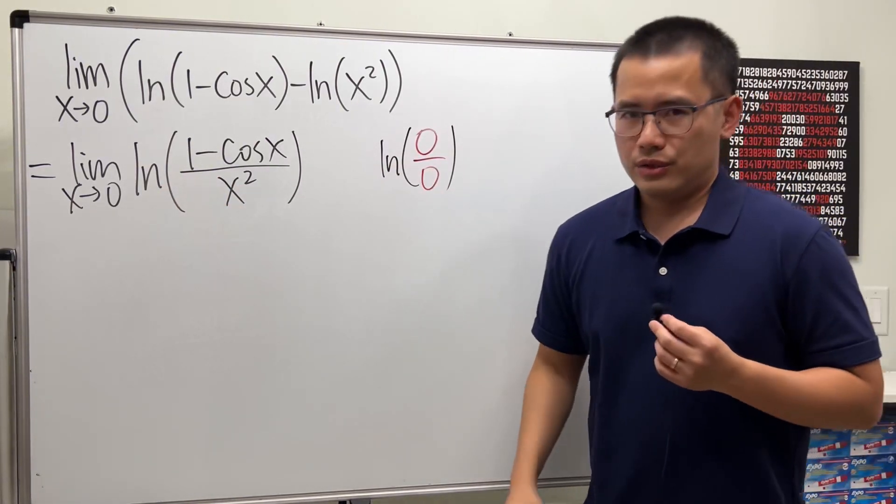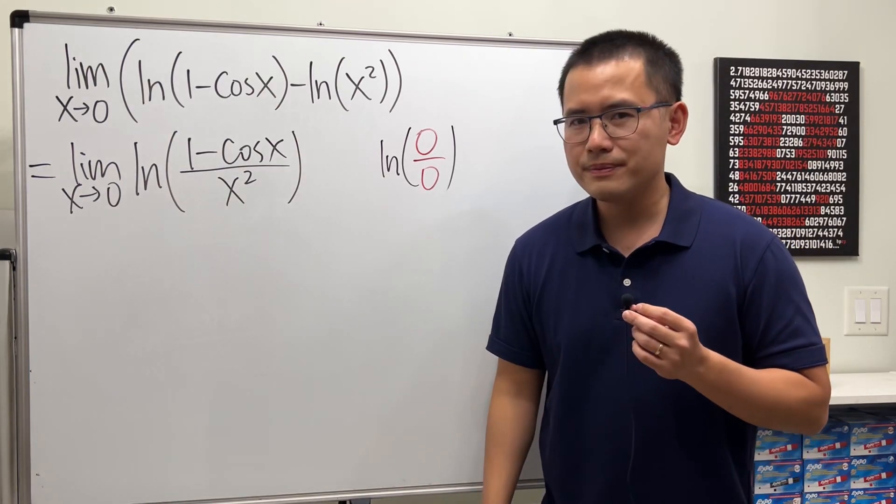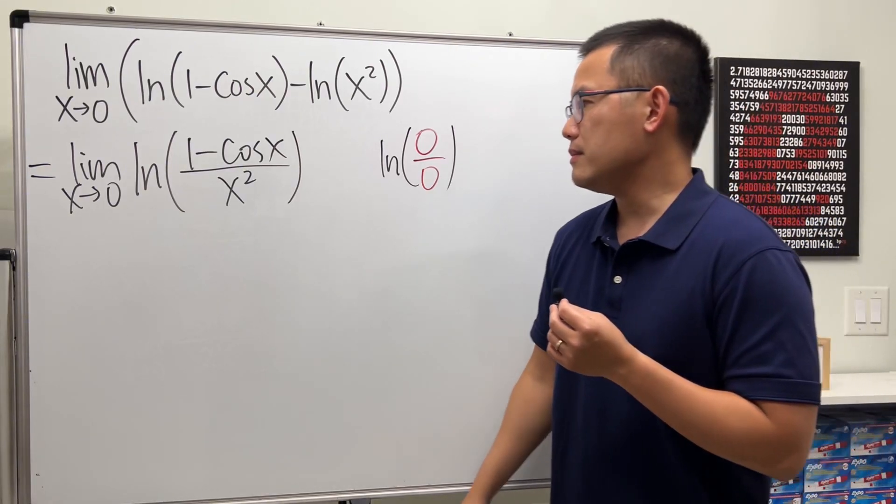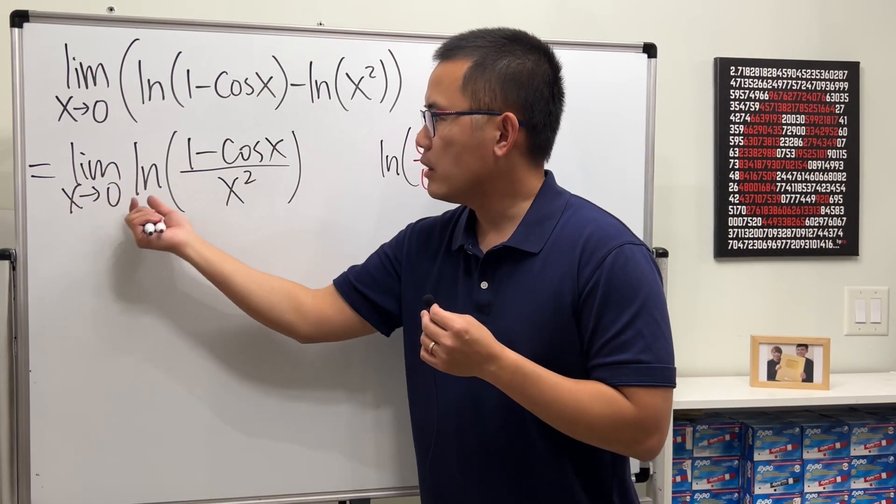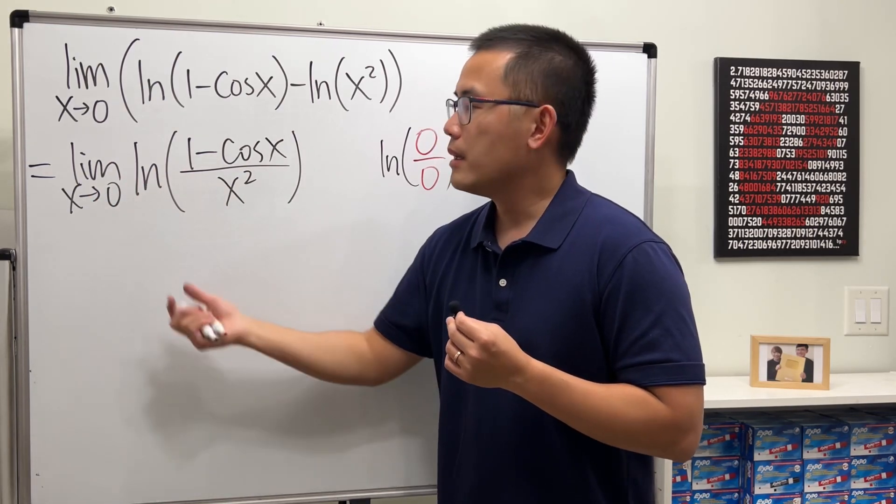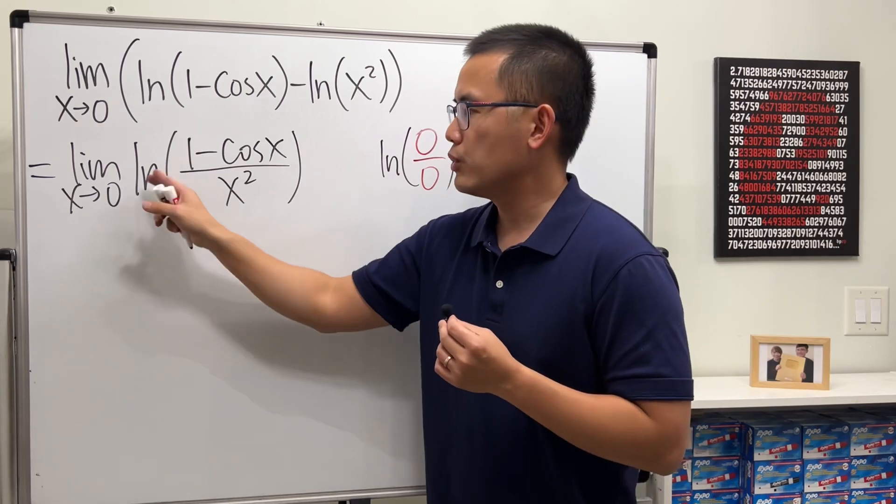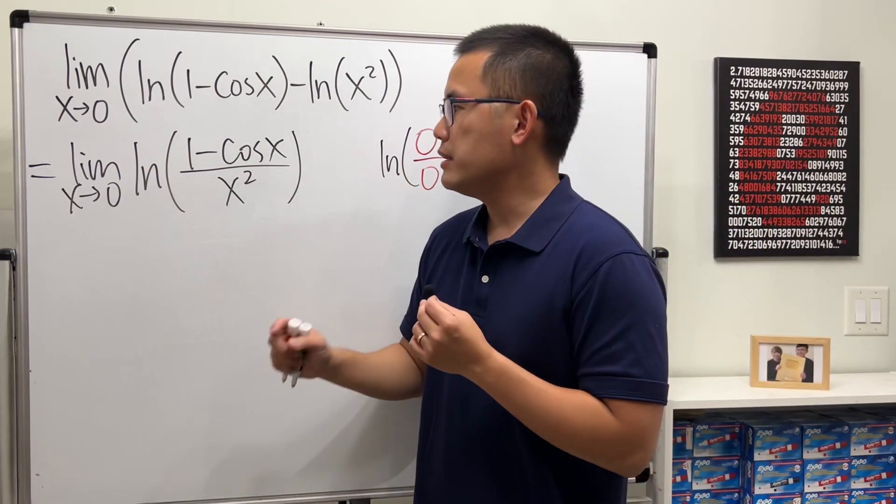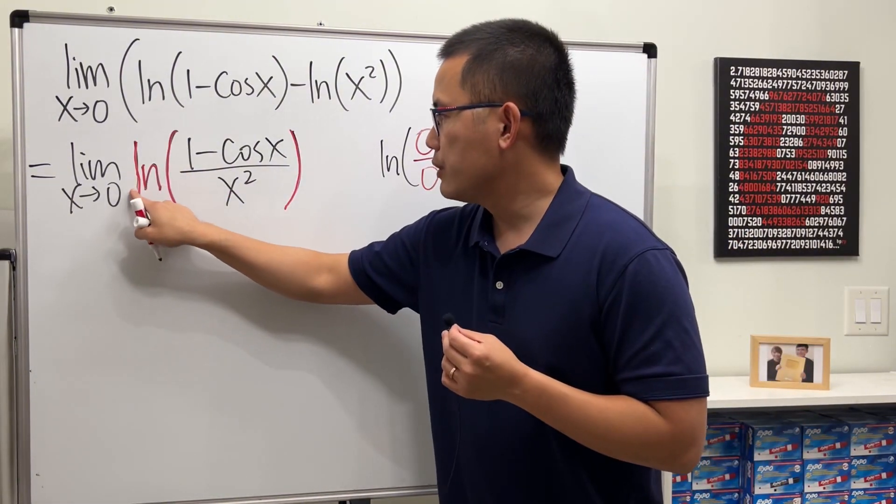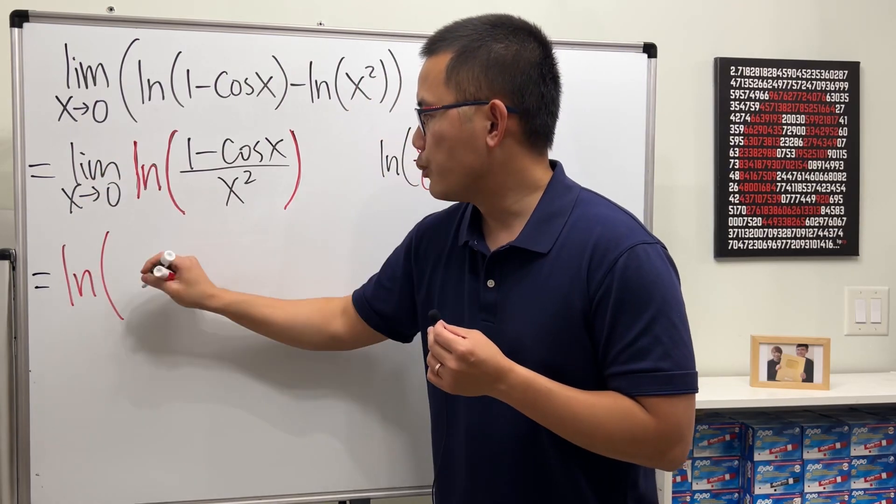Here's a small technical part. In fact, whenever we are calculating the limit of a ln function, we can do this inside out, meaning just focus on the inside, take the limit, and after that do the ln. The reason we can do this is because ln is a continuous function. I'm going to put it on the outside and then we bring the limit inside, and we're just focusing on computing this limit first.